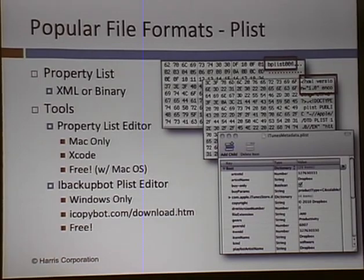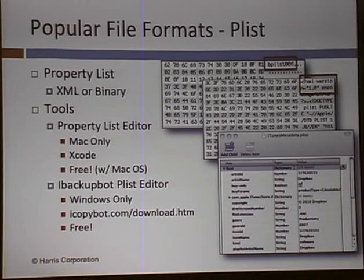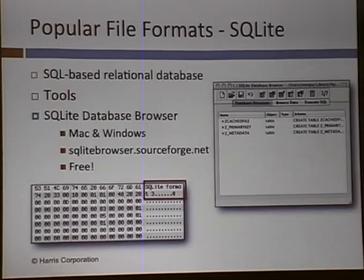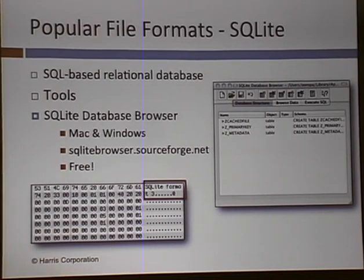Popular file formats you'll see are PLIST files and SQLite databases. PLIST files are property lists — they come in either XML or binary. Property List Editor comes with Xcode, it's free and works great. On Windows it was a little hard to find a good tool, but iBackupBot gets the job done. SQLite databases — probably everybody's heard of these. I use SQLite Database Browser as my personal preference.